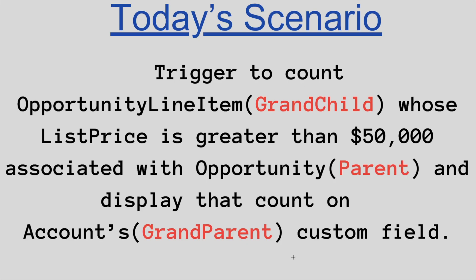Now let's talk about today's scenario. We need to count the number of Opportunity Line Items associated with an Opportunity, and after that we need to show that count on Account's custom field, where Account is the parent of Opportunity. The twist in this scenario is that there is no direct relationship between Account and Opportunity Line Item, so we have to find a way to connect these two objects.